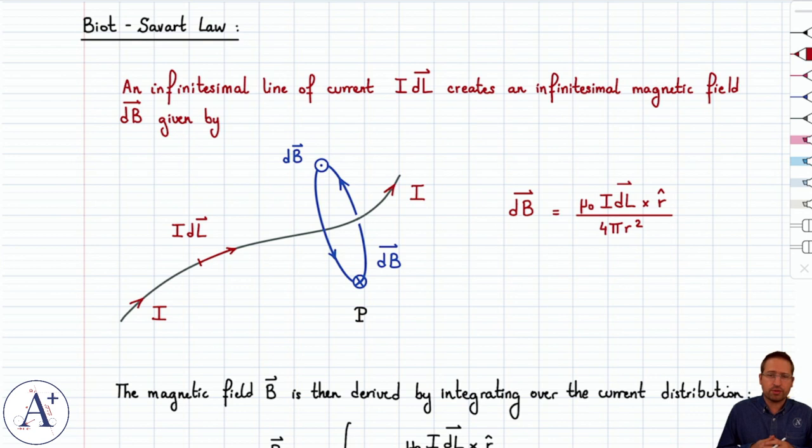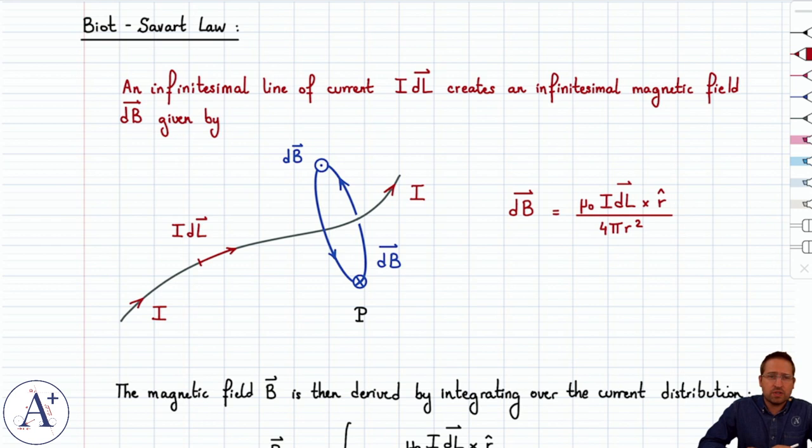So let's talk about the Biot-Savart law. In later videos, we'll go over the classic examples in which you can apply the Biot-Savart law and get a reasonable integral to compute the magnetic field created by the current distribution. Now the Biot-Savart law, first of all, has no physical justification. In other words, it's a mathematical construct — it's really just a formula that works.